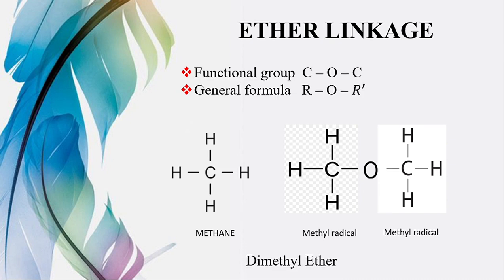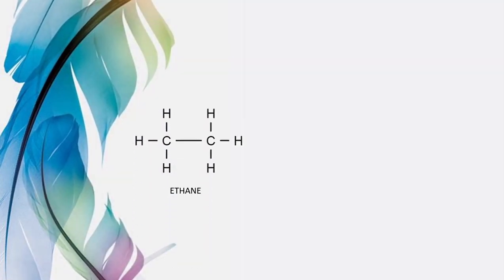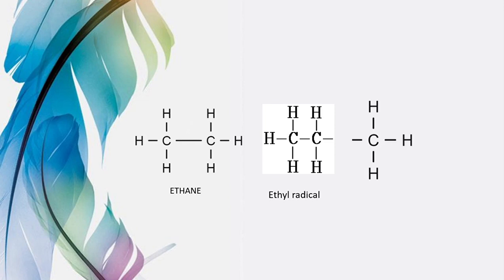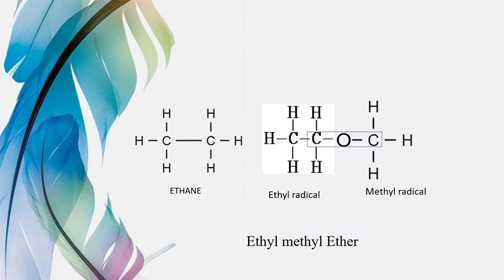Aur iska naam kya hua: humne do methyl istemal kiye hain, to yeh ban gaya dimethyl ether. Similarly humare paas hai ethane, ek hydrogen remove kiya, yeh ban gaya ethyl radical. Agar is ke saath hum methyl radical ke saath isko attach karein — ek taraf methyl radical, ek taraf ethyl radical, darmiyaan mein oxygen — to yeh carbon-oxygen-carbon ka bond ban gaya, ether linkage. Aur iska naam hua ethyl methyl ether.